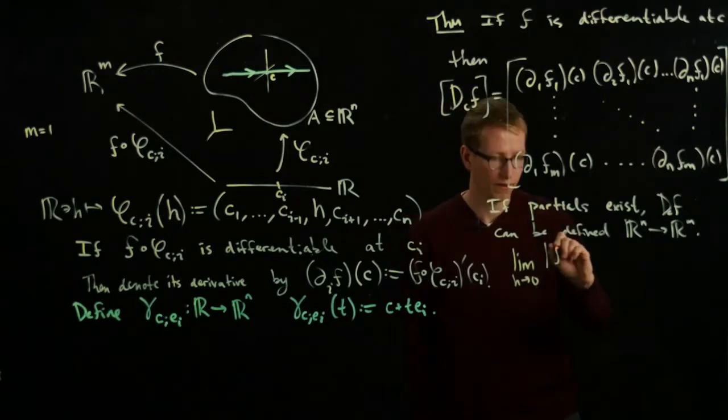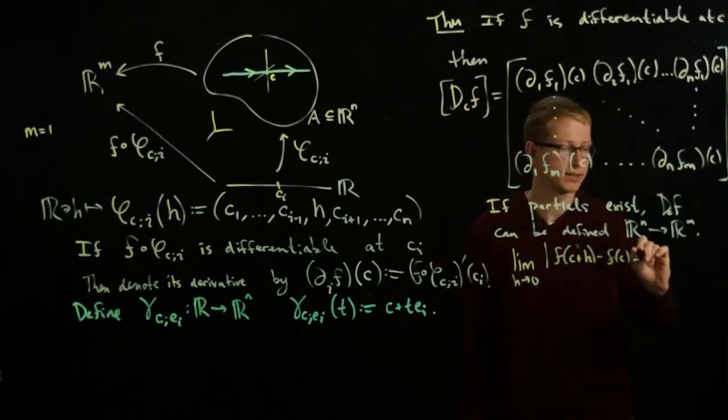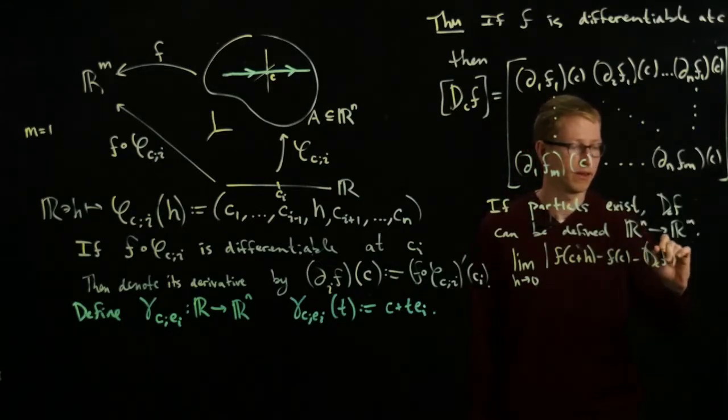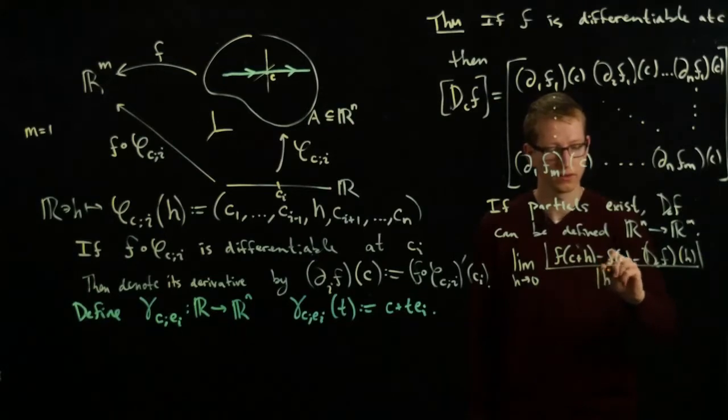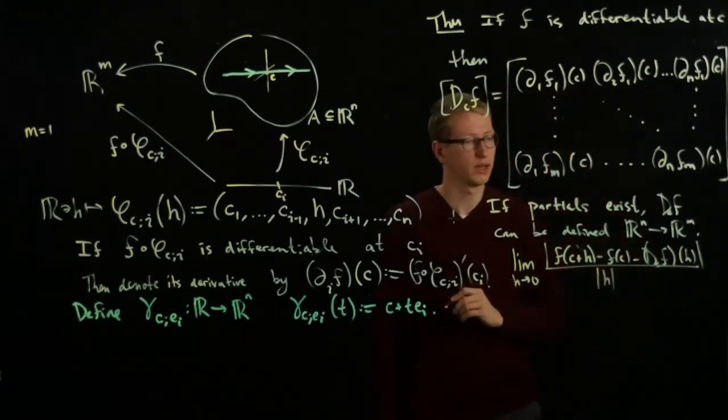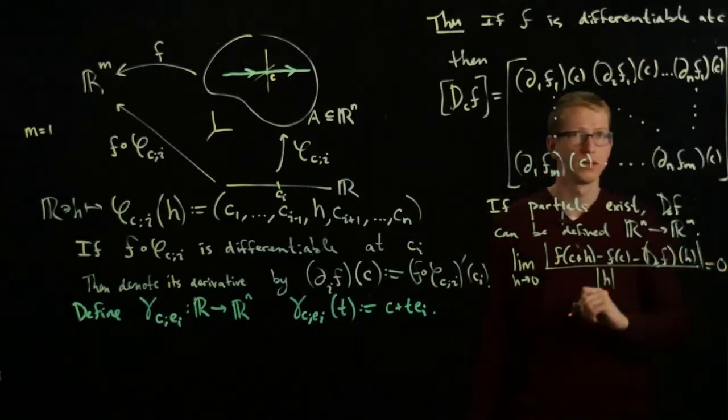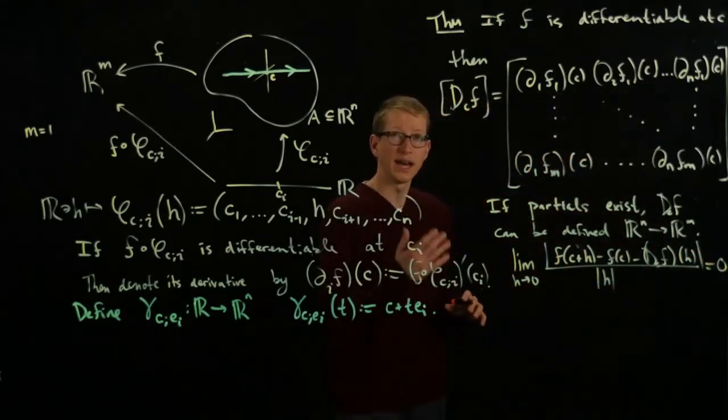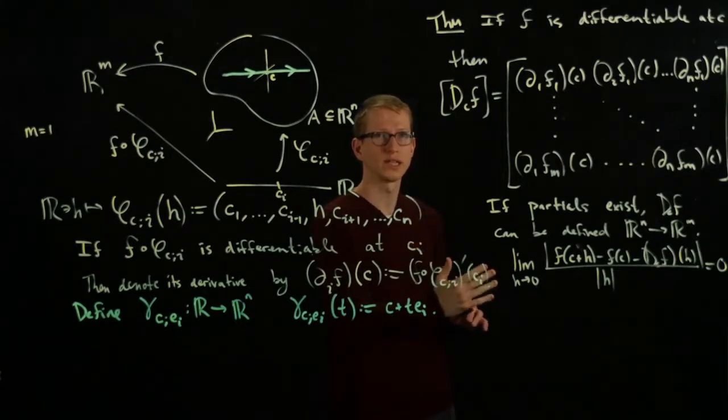Don't forget that the differential is not just a linear transformation—it's a linear transformation that satisfies an additional important property. This condition was that the limit as H approaches 0 of [F(C+H) - F(C) - D_C F(H)] over the norm of H, and this limit has to equal 0.